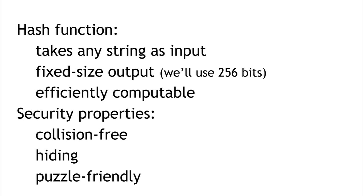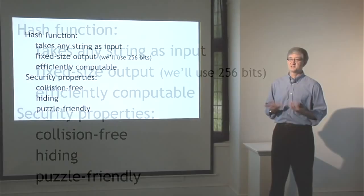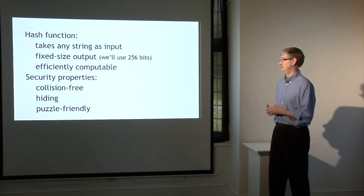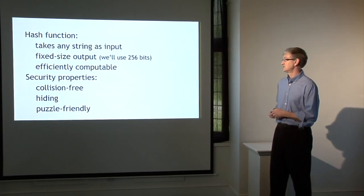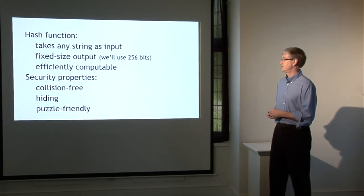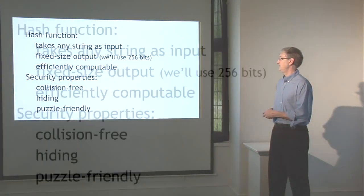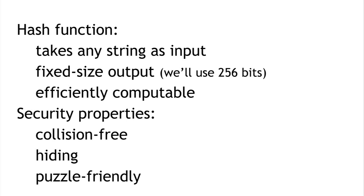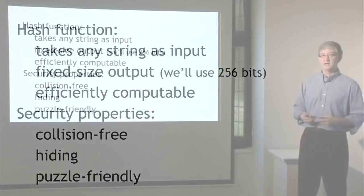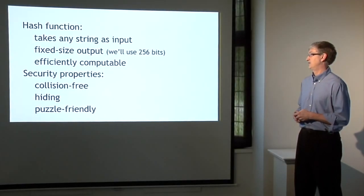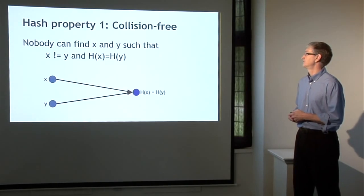That's a hash function, but we're going to need hash functions that are cryptographically secure. The cryptographic properties of hash functions are a complicated topic, but we're going to focus on three particular properties: that the function is collision-free, that it has a hiding property, and that it's puzzle-friendly. For each of these, I'll talk about what the property is, what it means, and why it's useful to have a function with that property. So first, collision-free.